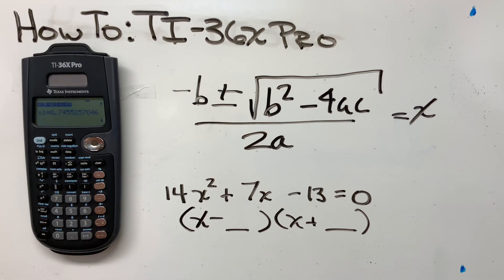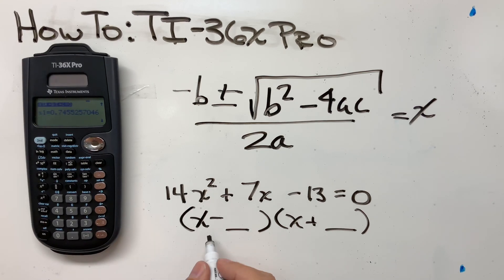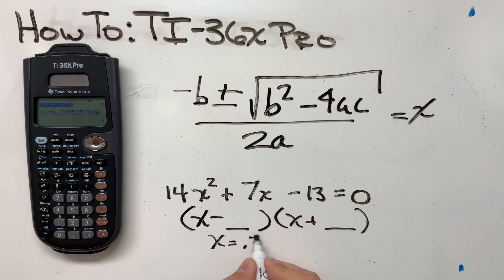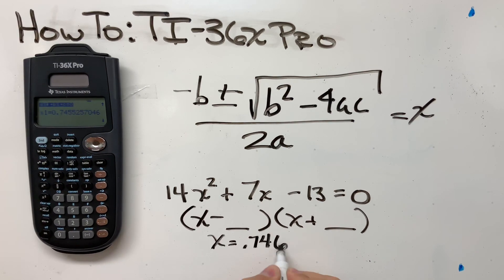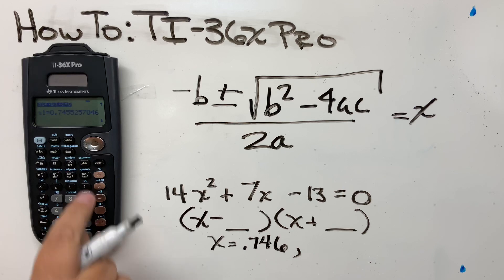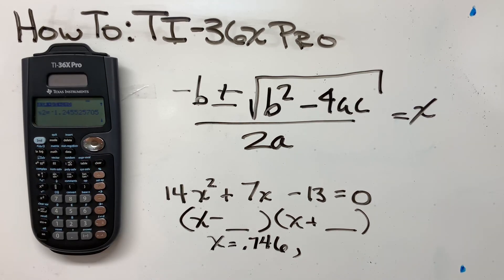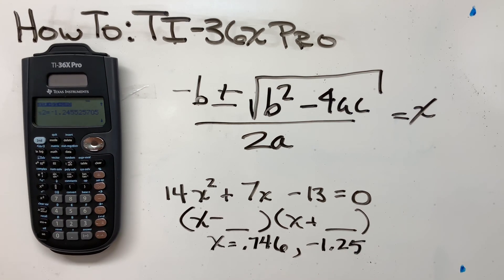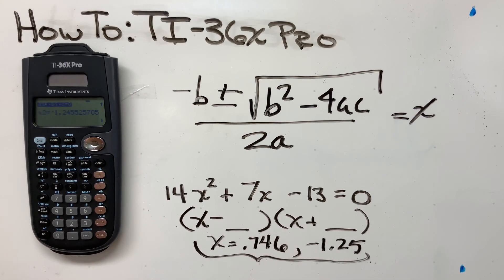And when I hit solve one more time, boom, it gives me my roots. So x needs to be equal to 0.746, or arrow down, minus 1.25. And those are my two roots.